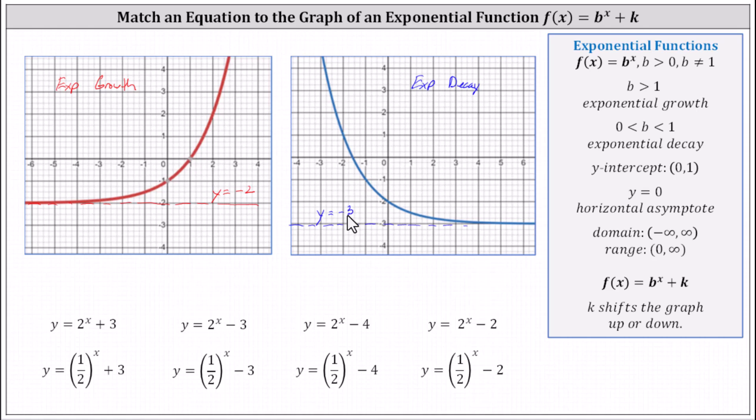So we should recognize that because the graph on the left is exponential growth, the correct equation must be from the first row, because the base is greater than one. And the equation for the blue graph on the right will come from the second row, because all the bases are one half and we have exponential decay.